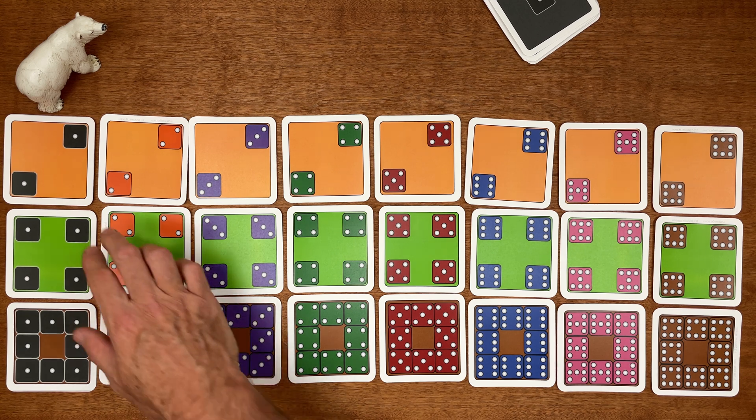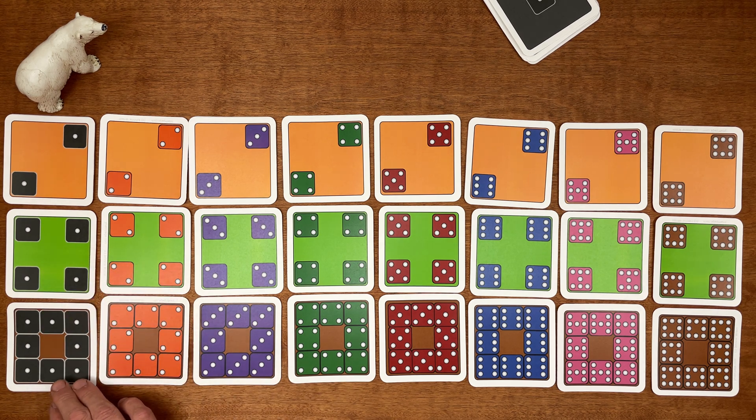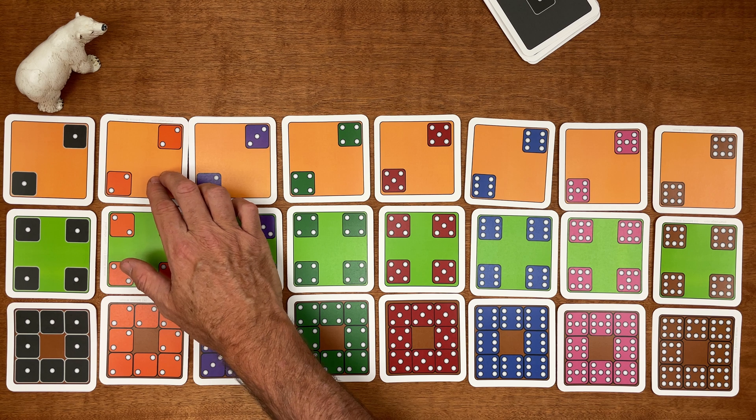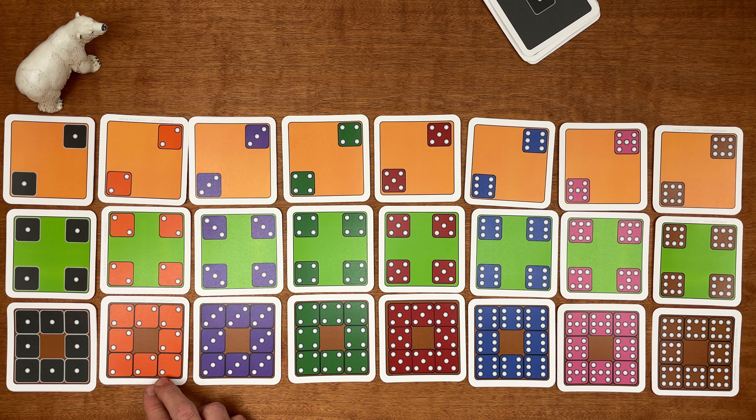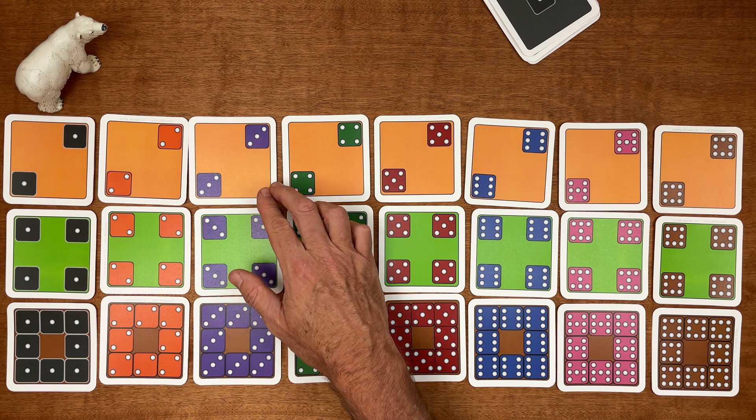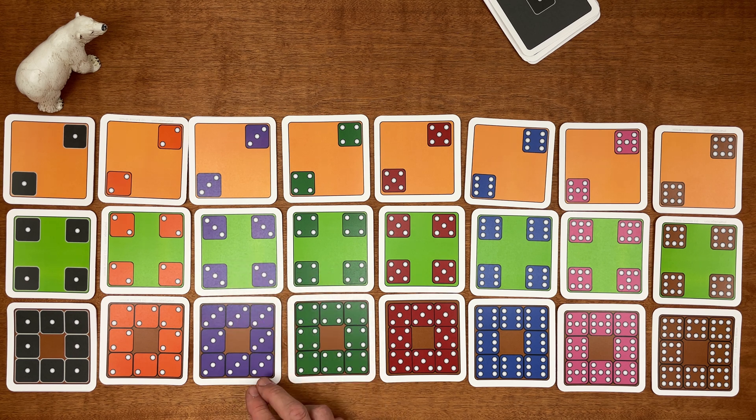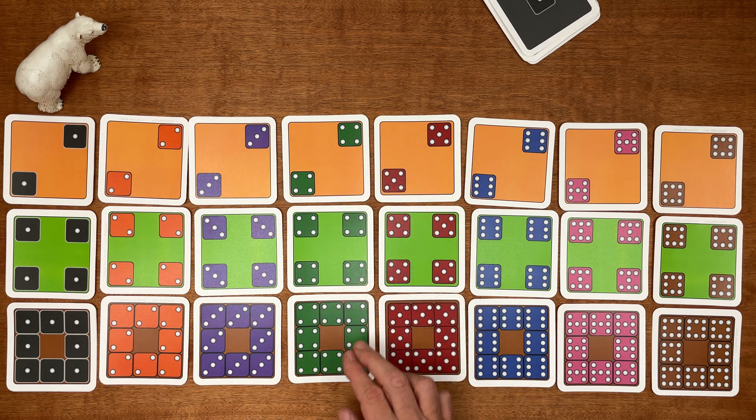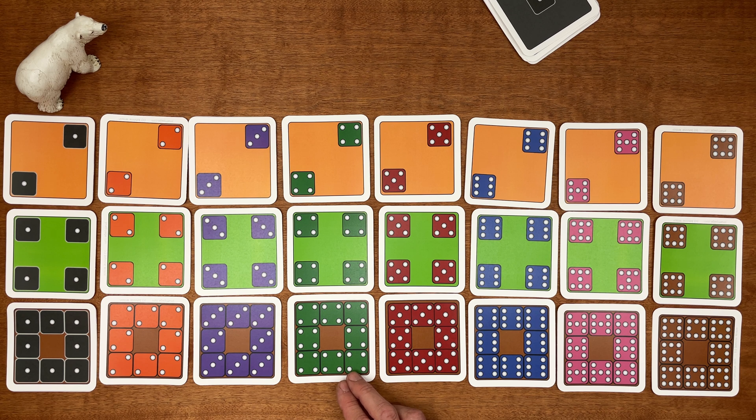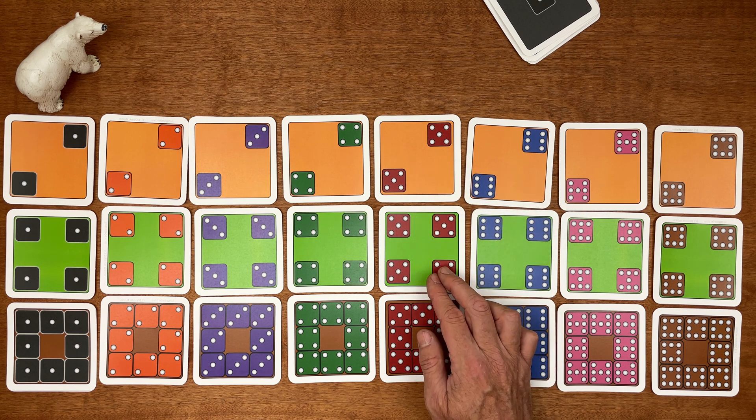So let's see. Two ones is two, four ones is four, eight ones is eight. What happens here? Two twos makes four, four twos makes eight, eight twos makes sixteen. Two threes makes six, four threes makes twelve, and eight threes makes twenty-four. Two fours makes eight, four fours is sixteen, and eight fours is thirty-two. Two fives makes ten, you knew that, four fives makes twenty.